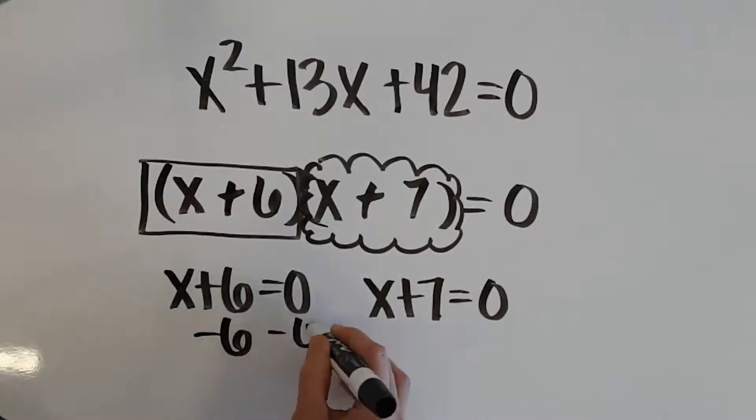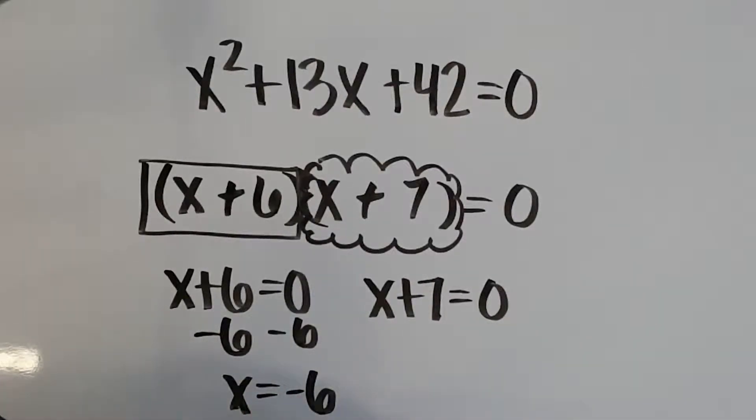So, if I solve each of these, this factor gives me an x value of negative 6, whereas our second factor gives me an x value of negative 7. So, let me show you why these are the two possible solutions.